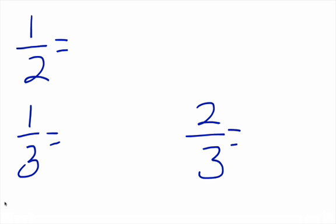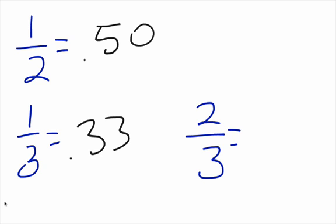We probably already know what 1 over 2 is — half, or 0.50. We know that 1 over 3 is 0.33, and 2 over 3 is 0.66. Get those in your memory bank ASAP.